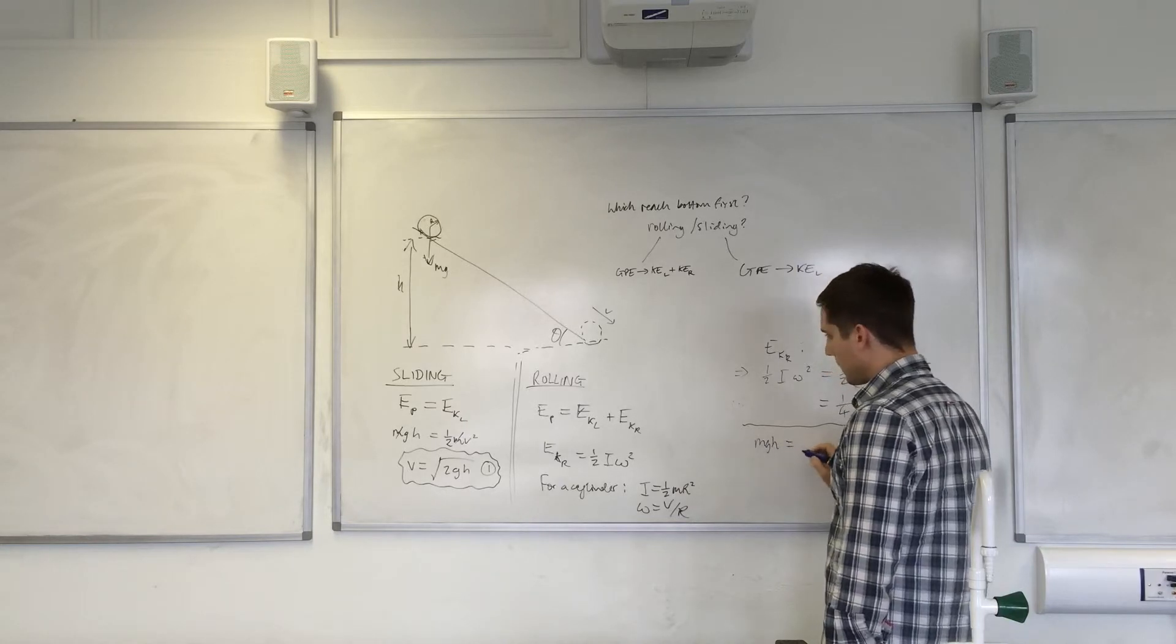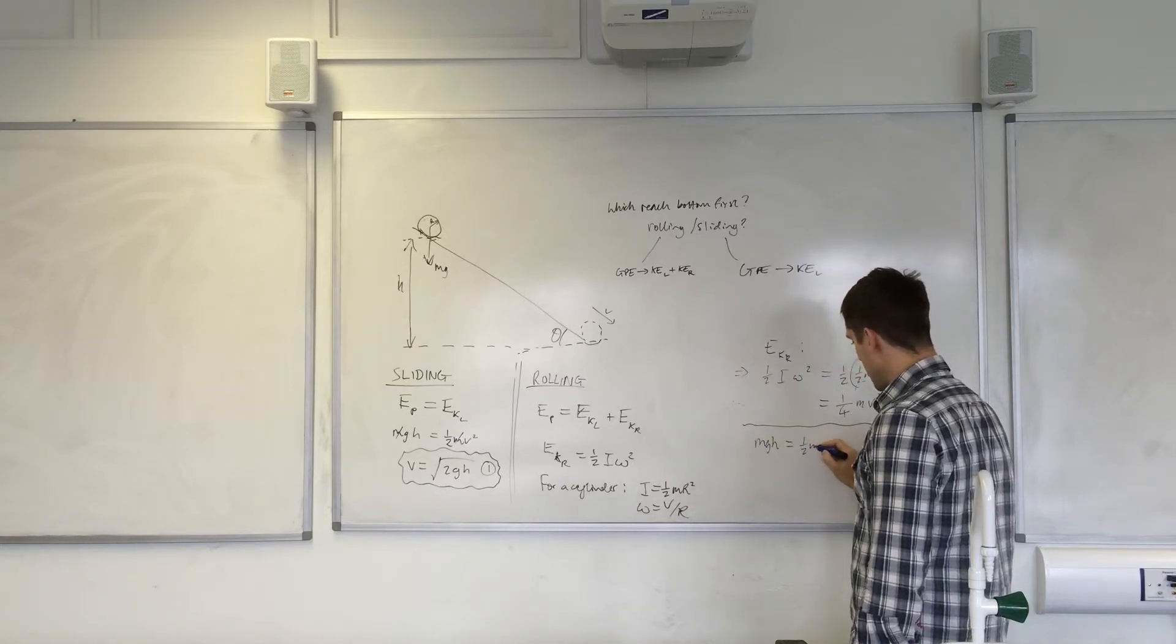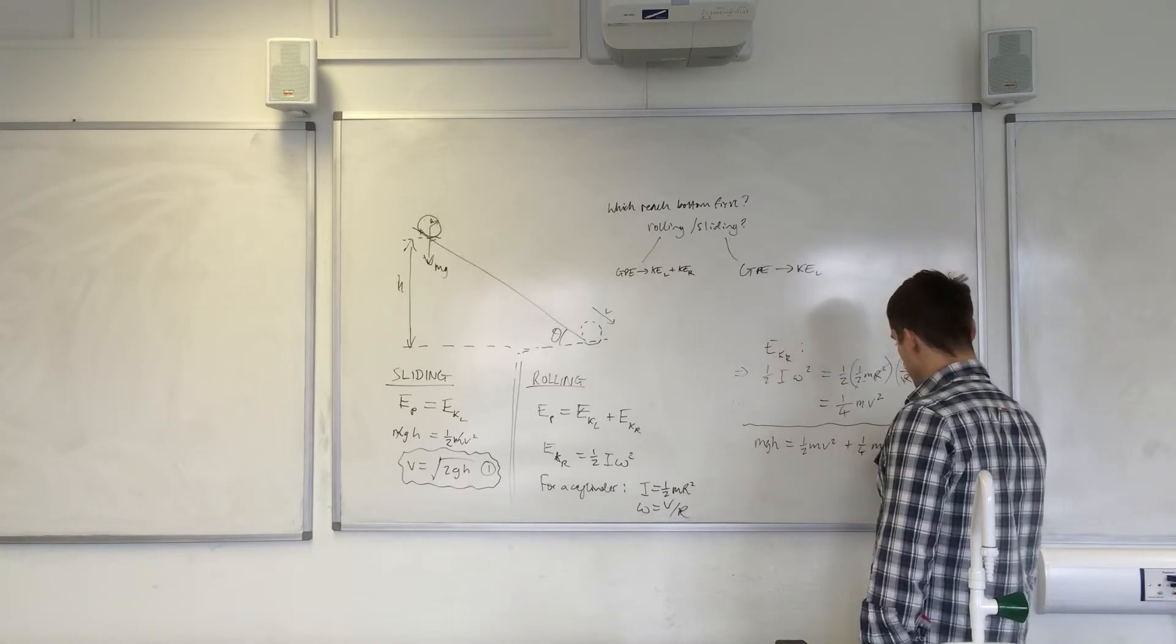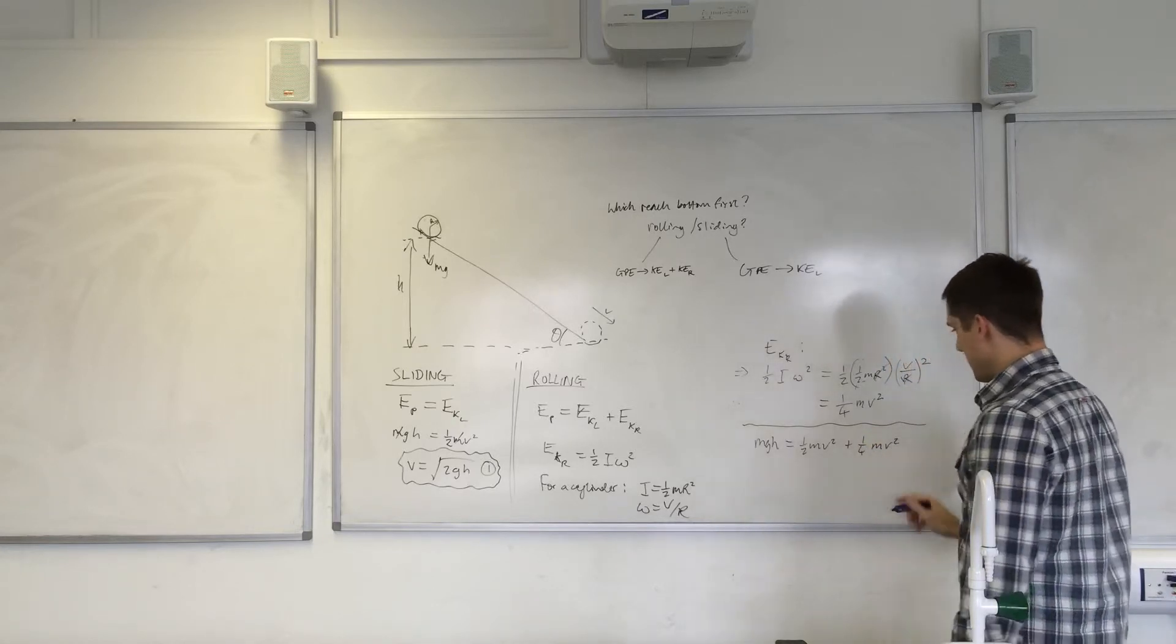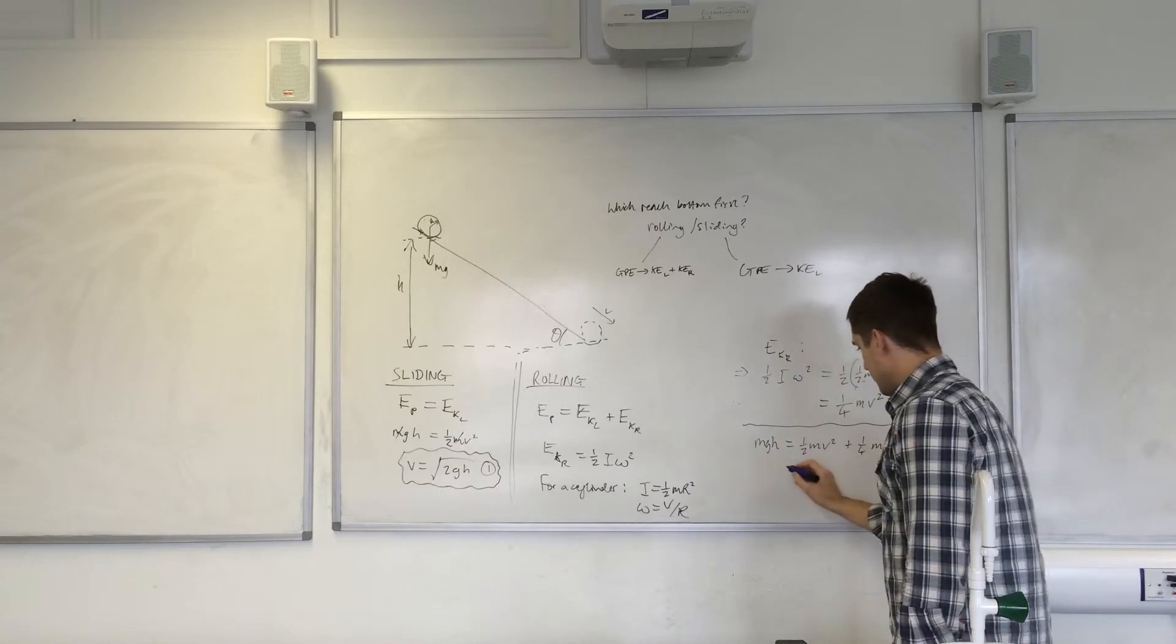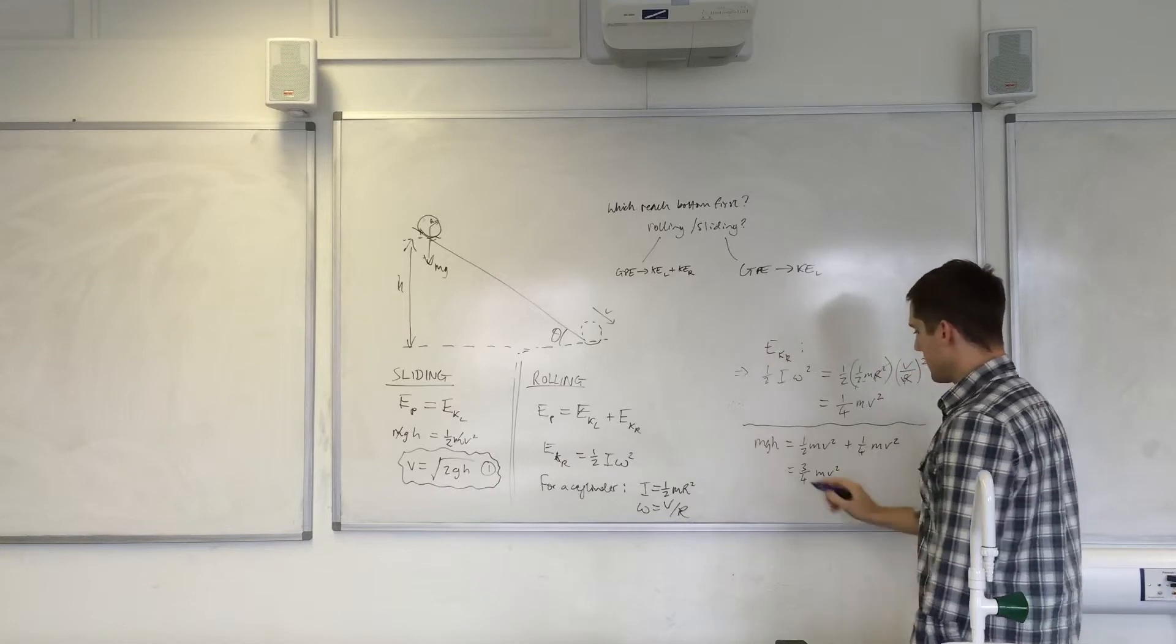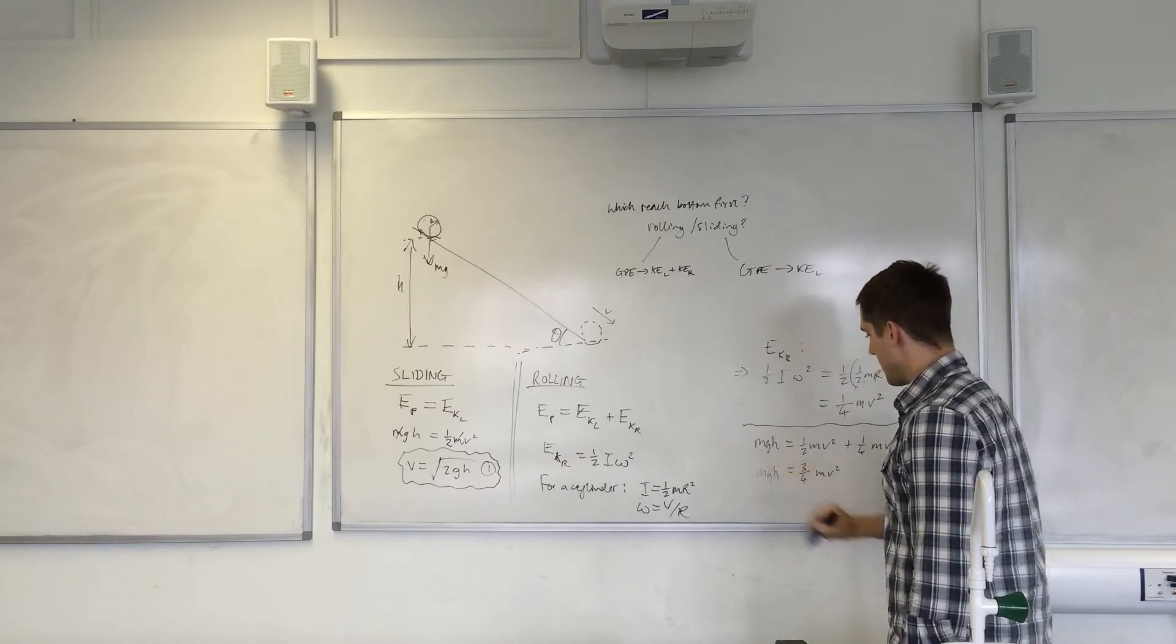mgh gets turned into a half mv squared plus a quarter mv squared. We've got half and a quarter, so that is three-quarters mv squared.